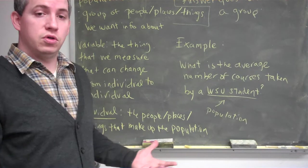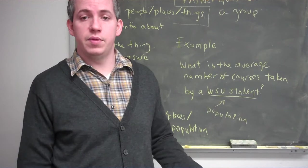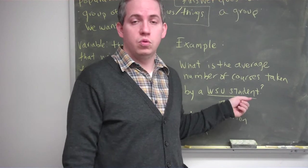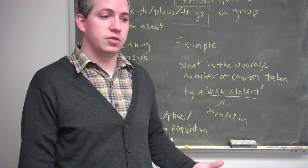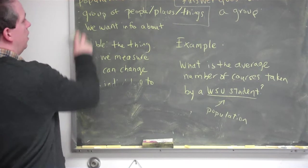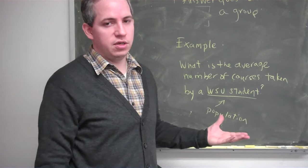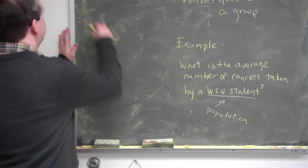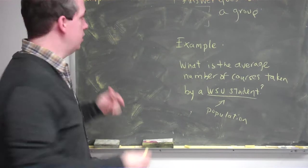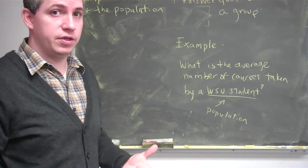In this particular question — what's the average number of courses taken by a Wayne State University student — I'm going to have to go and either ask students or look up this information in the Registrar. There are 30,000 Wayne State University students. Do I need to ask all of them? In general, your population is going to be so large that there's no reason to ask every single person. So what we'll do instead is hone in on a particular subset of individuals, which we call a sample. A sample is a subset of the population, made up of individuals, but a smaller group.